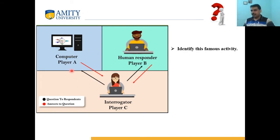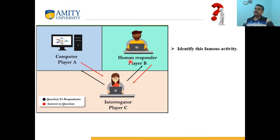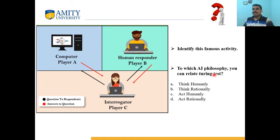This is the famous Turing Test experiment to determine if a computer is equally intelligent as a human. In one room there is an interrogator, and in the remaining two rooms there is a computer and a human responder, but the interrogator is not aware which room contains the computer and which contains the human. To which AI philosophy can you relate the Turing Test? Think humanly, Think rationally, Act humanly, or Act rationally?